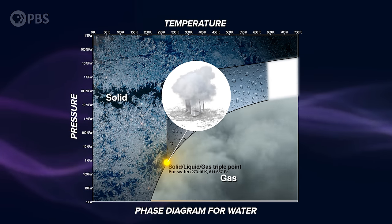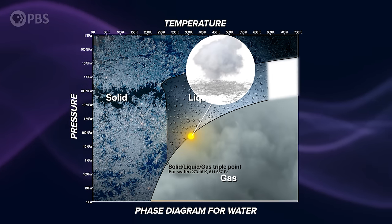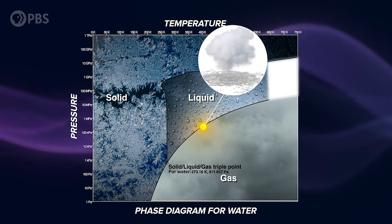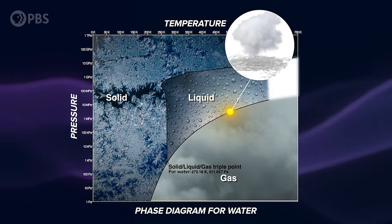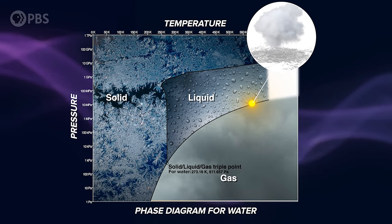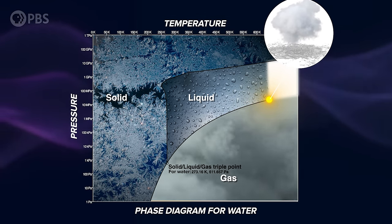From the triple point, if we increase both temperature and pressure in the right proportions, we follow the phase transition boundary between liquid and gas. If we're careful, our fluid remains in an equilibrium state, simultaneously boiling and condensing. But eventually we reach this spot where the boundary appears to end.